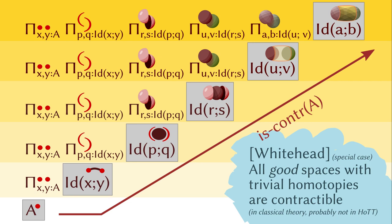Anyways, the unit type has trivial homotopies in all dimensions, and thus if a good space has only trivial homotopies, it is equivalent to the unit type, which means that it is contractible. Therefore, we can summarize these triviality conditions as contractibility.